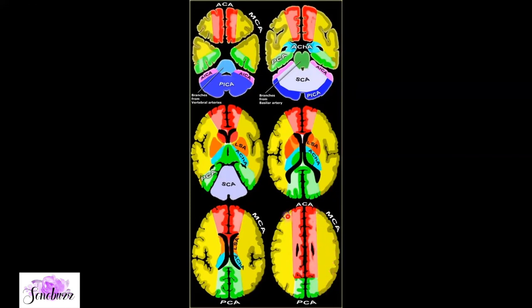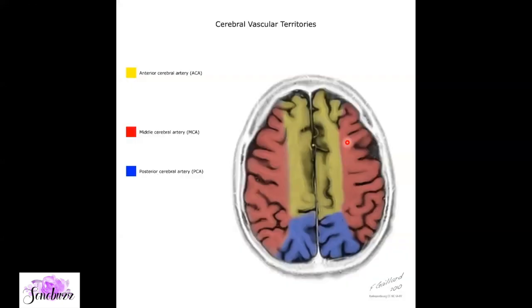The larger part of the brain marked in yellow is MCA territory. Posteriorly, even in the superior parasagittal part, is the PCA — which can sometimes be a confusing area. The basal ganglia, thalamus, and internal capsule form a distinct zone we will look at in more detail.